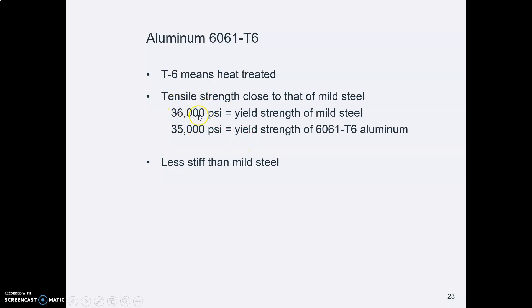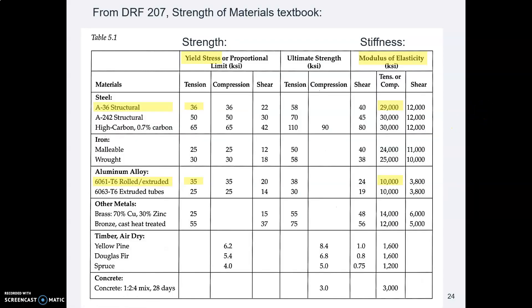So, 6061 is aluminum with a particular strength that was heat treated. What's interesting is it is almost the same tensile strength, yield strength, as good old mild steel. So, let's look at, in this last slide, we'll look at a chart from the Strength of Materials class. You may or may not have taken that class yet, but here's a chart from that class's textbook.